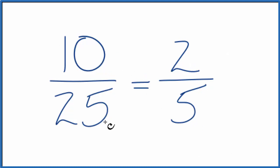If you were to divide 10 by 25 or 2 by 5, you would get the same answer. These are equivalent fractions. It's just that we've simplified 10/25ths, and now this is in simplest form.